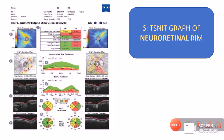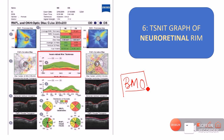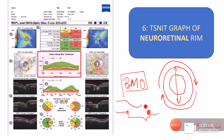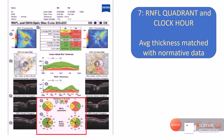In this patient, the TSNIT map shows the dotted line dipping into the red zone in the nasal and inferior part of the peripapillary RNFL representation, consistent with the abnormal RNFL deviation map. Very similar to the TSNIT graph of RNFL thickness, we also have a TSNIT graph of the neuro-retinal rim, which measures the thickness of the NRR along the Bruch's membrane opening. The difference is that RNFL thickness is measured at a 3.45 mm circle around the disc, while neuro-retinal rim thickness is measured from the Bruch's membrane opening to the internal limiting membrane.